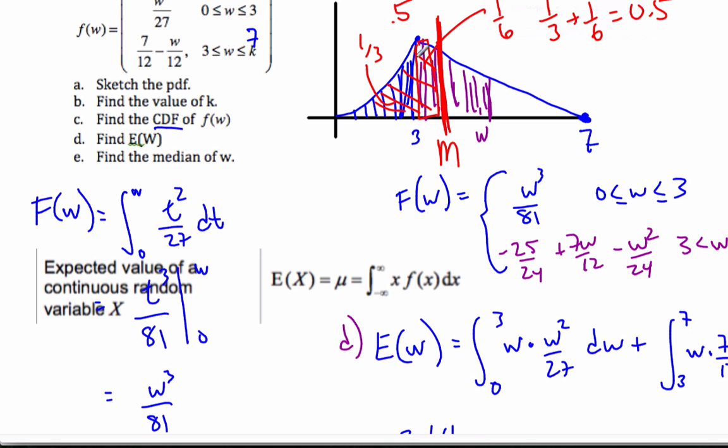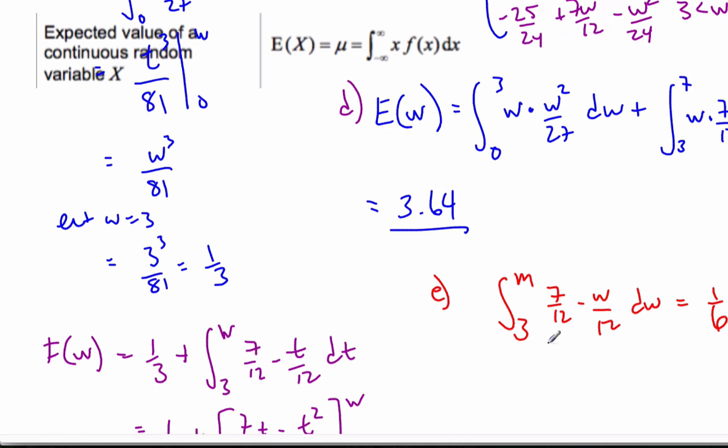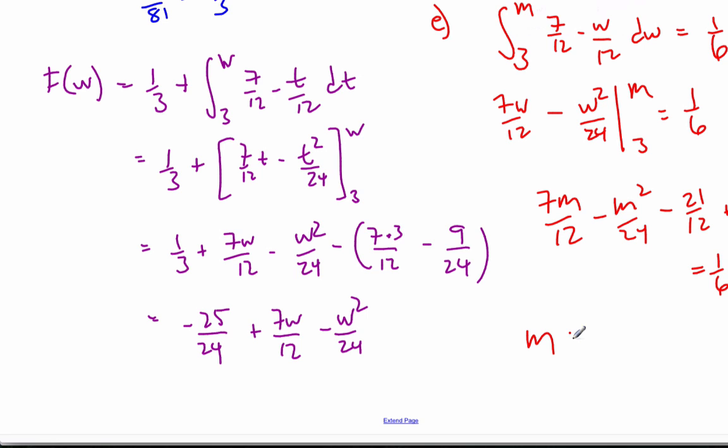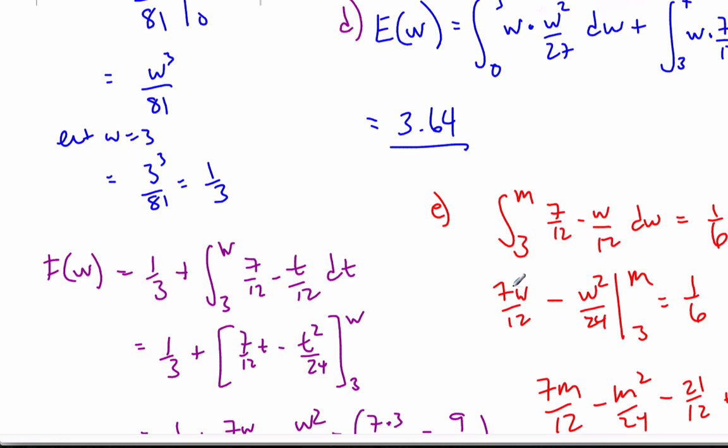Because I know for sure that this is 1/3, and so I'm just looking for when this M value is going to be added to 1/6 so that the area is in total the median of 0.5. So I do my integral calculus now, which then I get 7W over 12 minus W squared over 24. I'm going to do that from 3 to M has to equal 1/6. If I plug in my M, I get 7M over 12 minus M squared over 24 minus 21 over 12 minus minus makes it plus 9 over 24, and that has to equal 1/6. From here, I'm going to use my calculator to solve this. When it's all said and done, the median is going to be 3.54. I can get that from my calculator. Use the calculator to do simple algebra as often as possible.